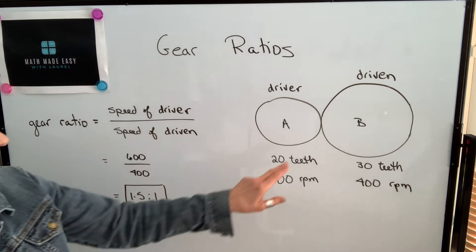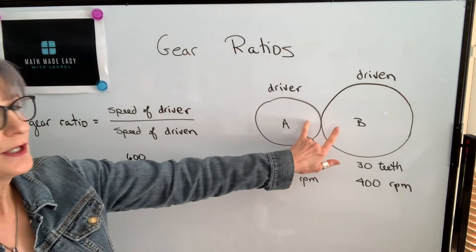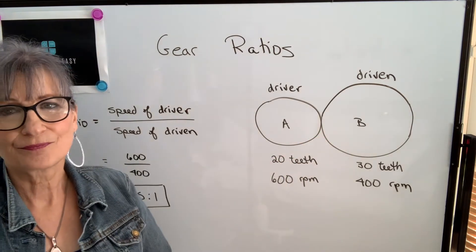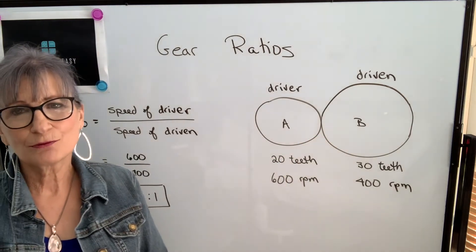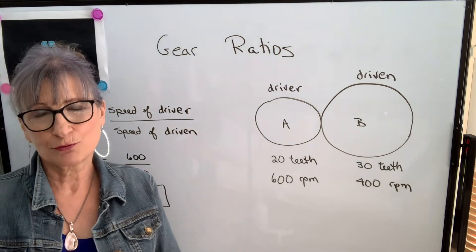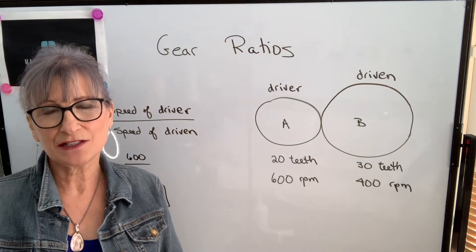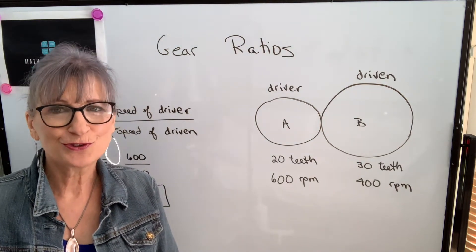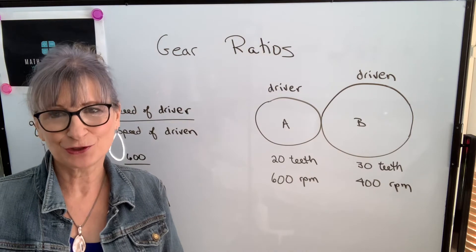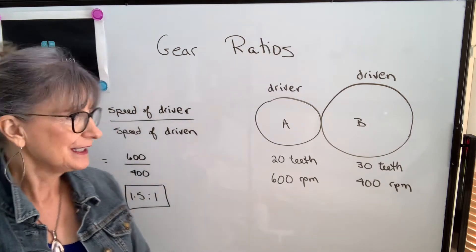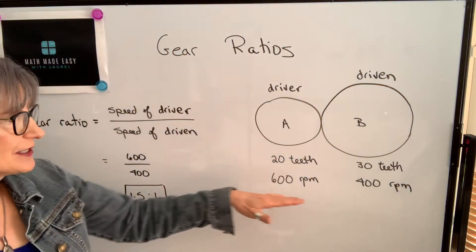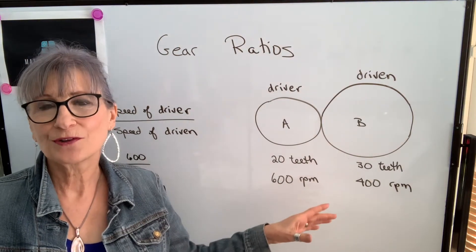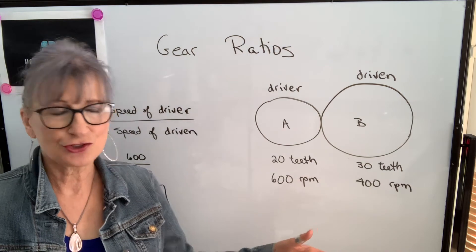So that would be the gear ratio of this gear train. We define gear ratio as a ratio of speeds. However, typically you don't use speeds to find gear ratios. The reason is you might not know the speeds, or the speeds may be changing.